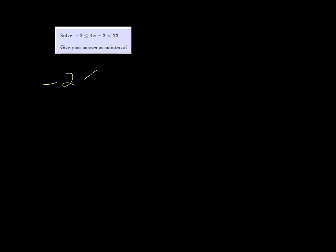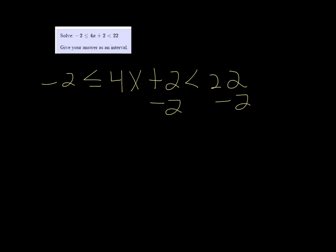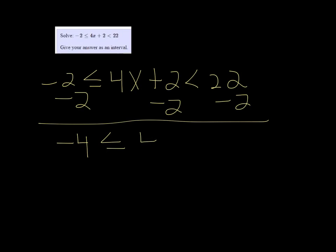We are solving negative 2 is less than or equal to 4x plus 2, which is less than 22. To get x alone, we're going to start by subtracting 2 from all three parts. So we get negative 4 is less than or equal to 4x, which is less than 20.